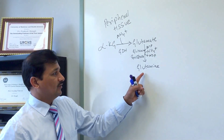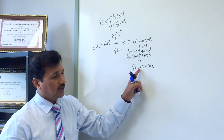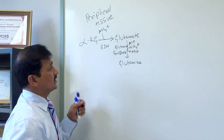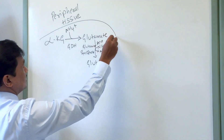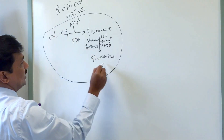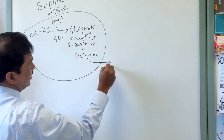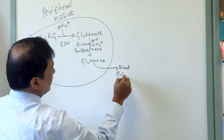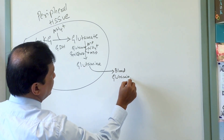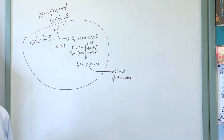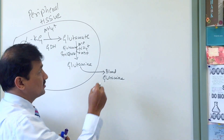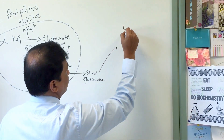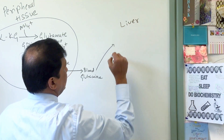Overall, in peripheral tissue we consume alpha-ketoglutarate and produce glutamine. This glutamine is secreted from the peripheral tissue into the blood. From the blood, glutamine will be taken up by three tissues — predominantly by the liver.